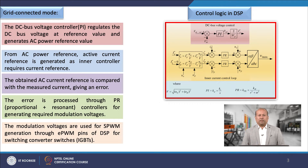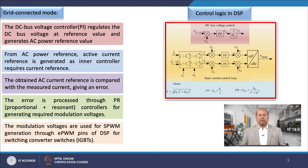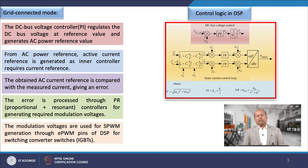The error is processed through proportional plus resonant controllers for generating the required modulation voltages. The modulation voltages are used for SPWM generation through EPWM pins of the DSP for switching converter switches, commonly IGBTs. The control variables of the PI controller as well as the PR controller can be obtained through proper tuning, ensuring that the stability margin should be sufficient.